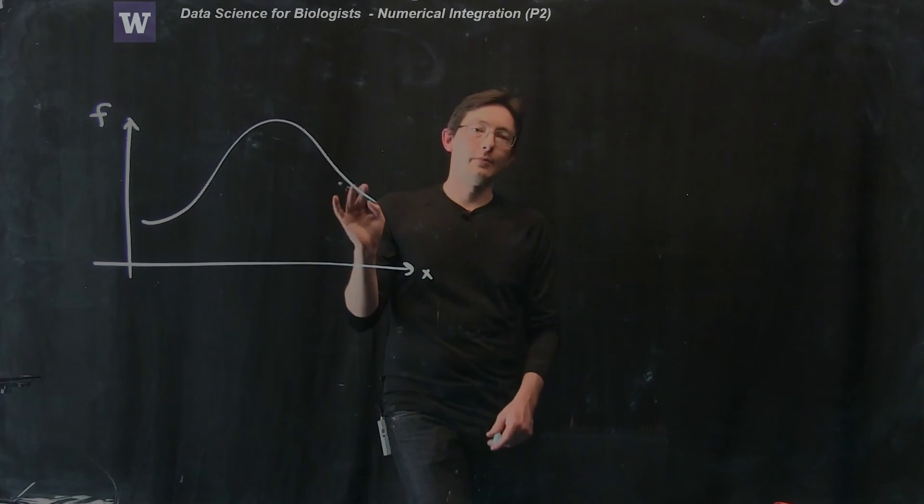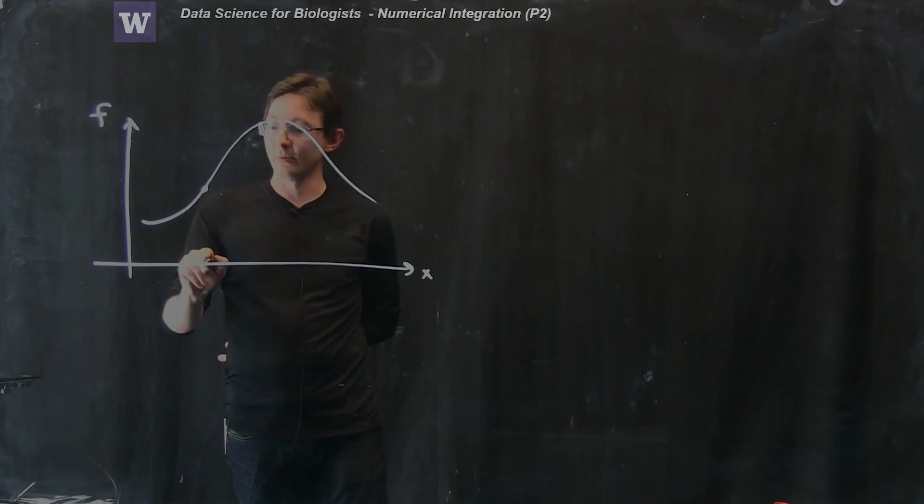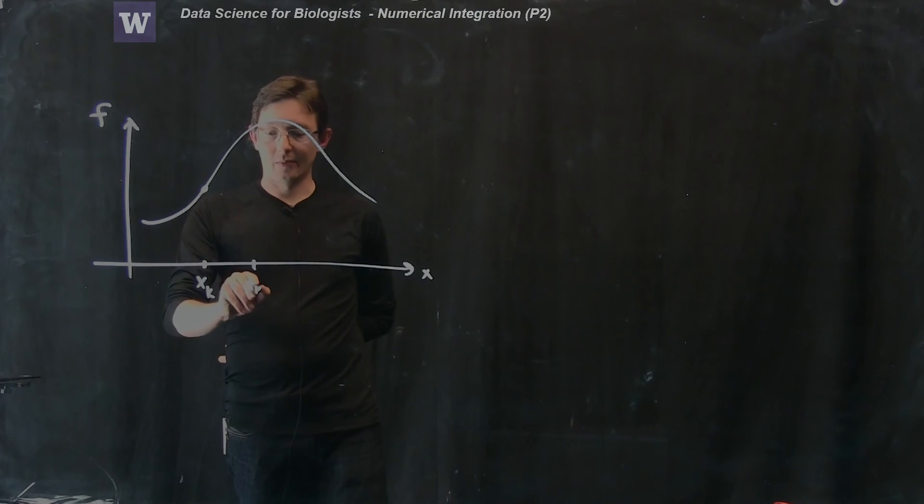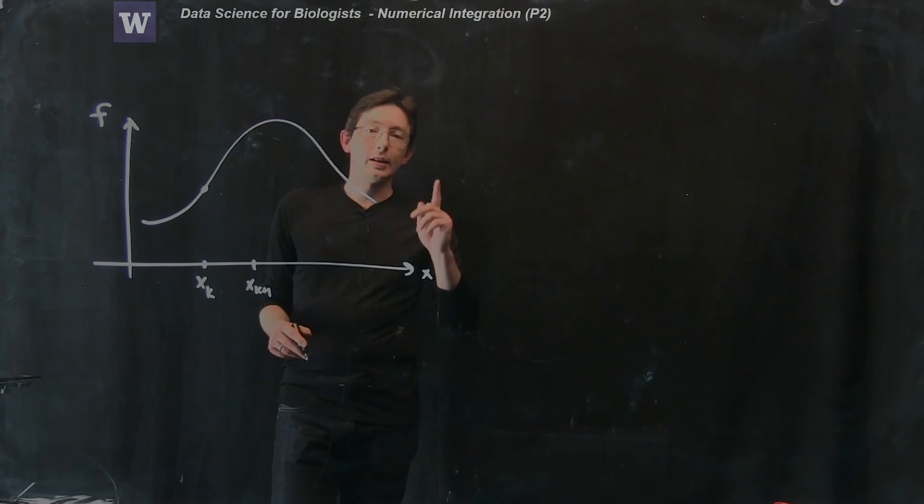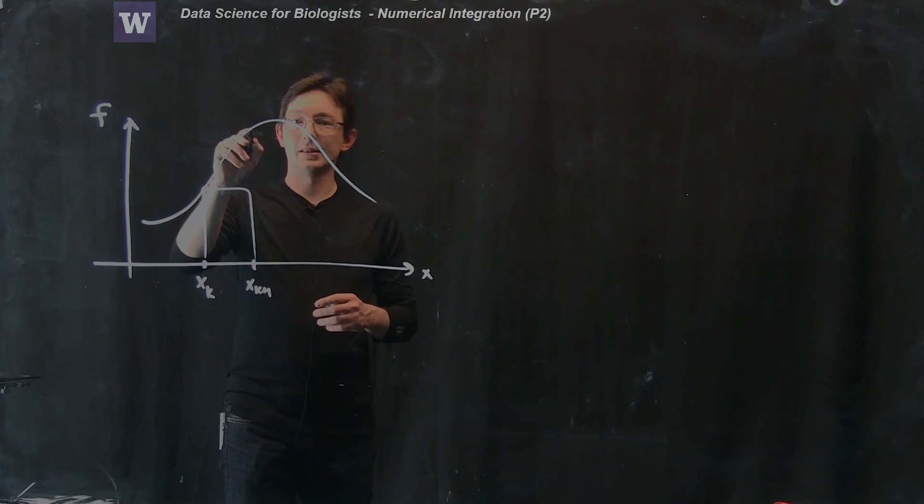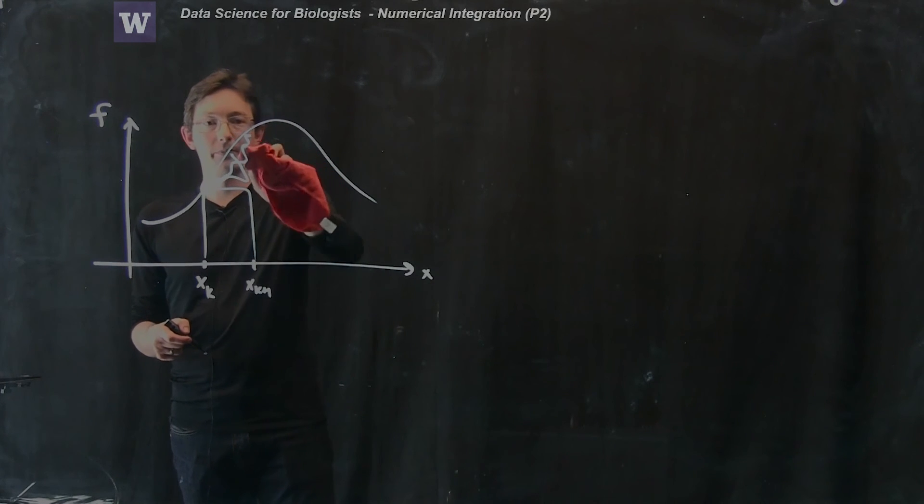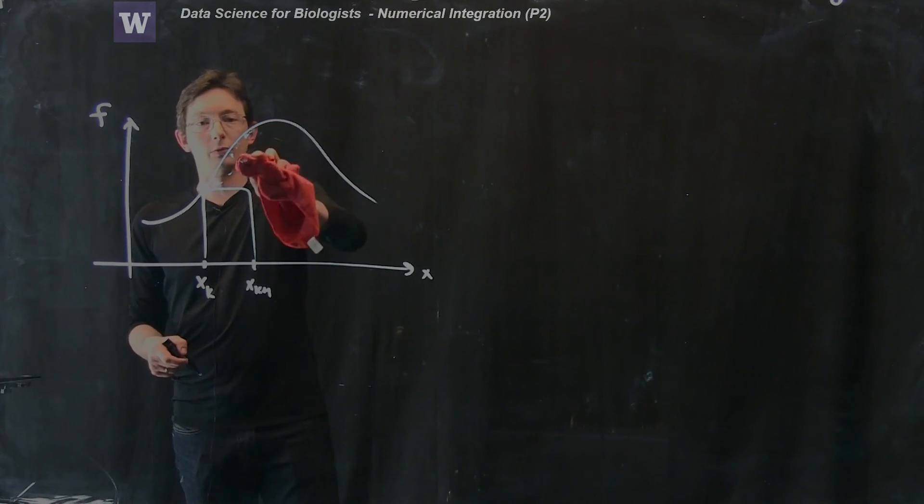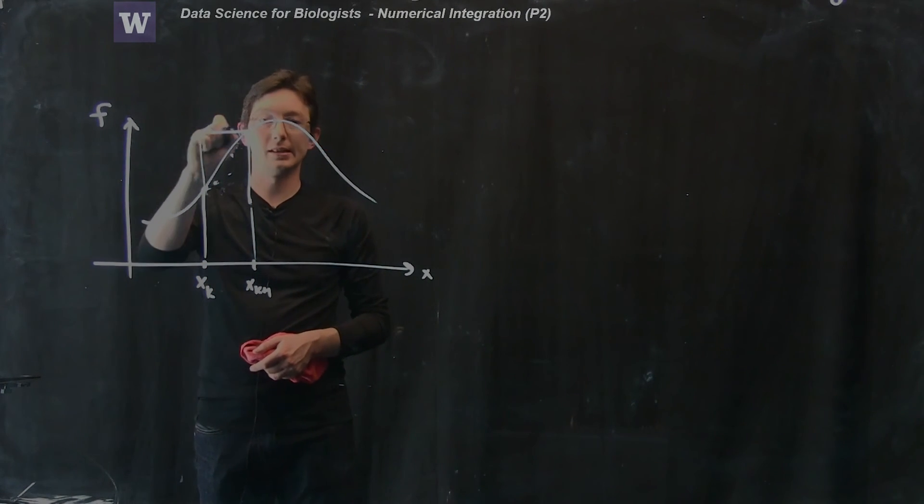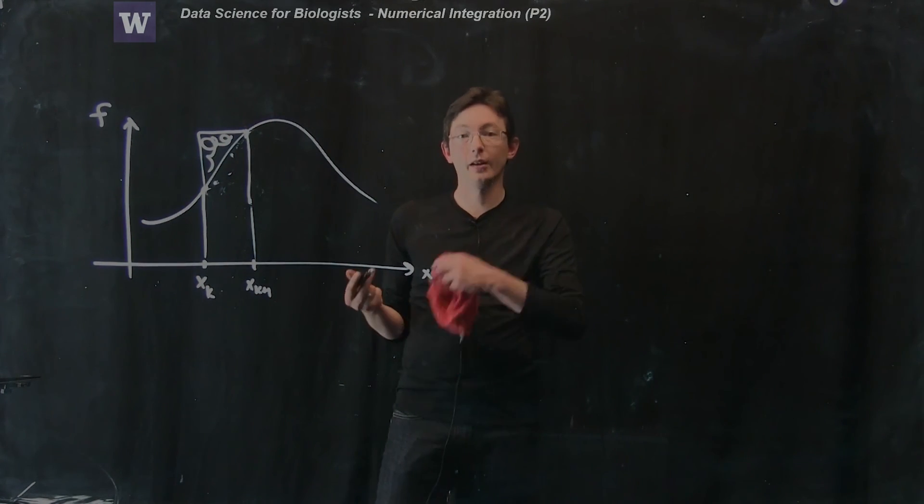We noticed that both our left and our right rectangles were over or under predicting. For example if I zoom in, I'm going to make a big cartoony system from xk to xk plus 1. In the case of the left rectangle I was massively under predicting all of this stuff up here. I didn't capture all of this with this rectangle. And in the case of the right rectangle rule I was massively over predicting, predicting all of this area here which is also erroneous.